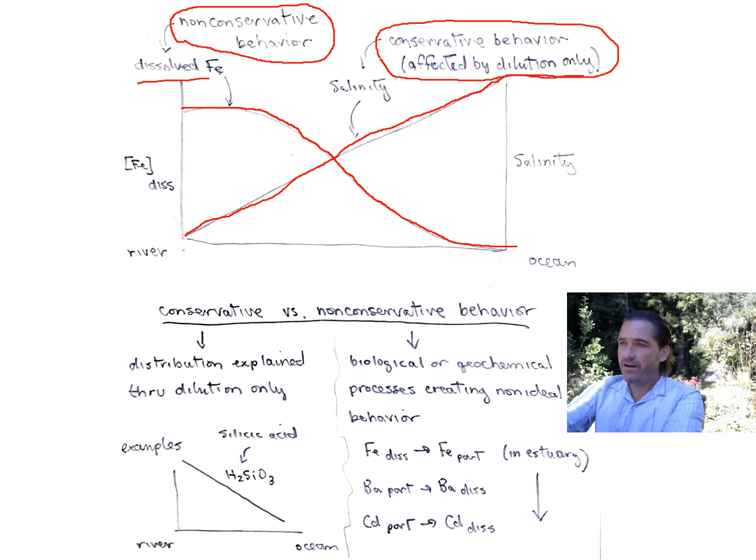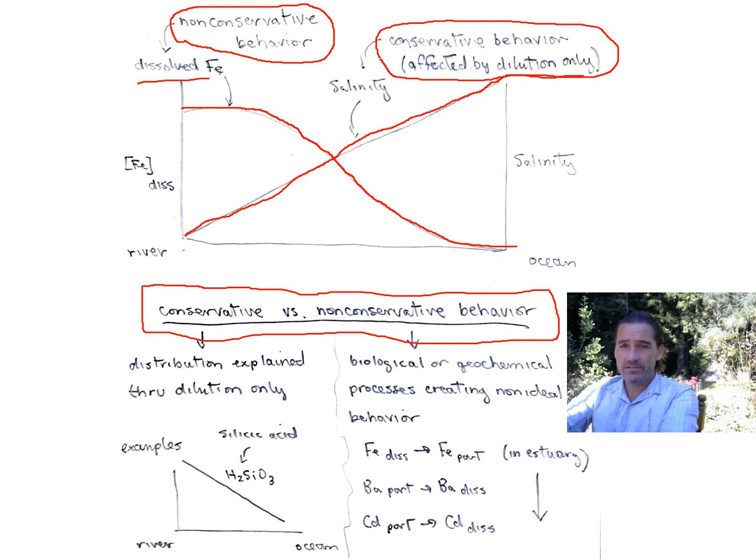What I want to bring to this conversation is two new terms that we will continue to discuss in the next few videos, is the behavior of these concentrations. And we would say that dissolved iron is behaving in a non-conservative way because its change is not affected just by dilution alone. Salinity here is a straight line because it is behaving conservatively. The only change here in terms of its concentration is due to the fact that it is being diluted by the river water.